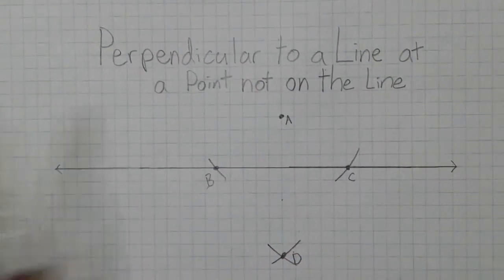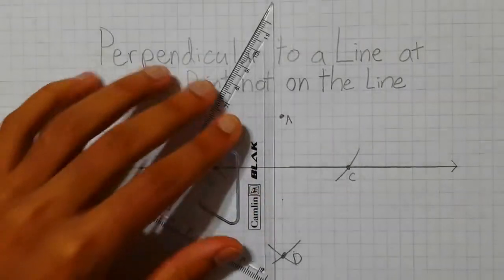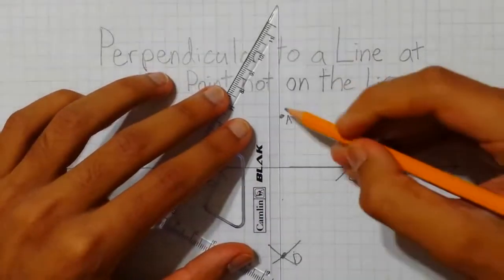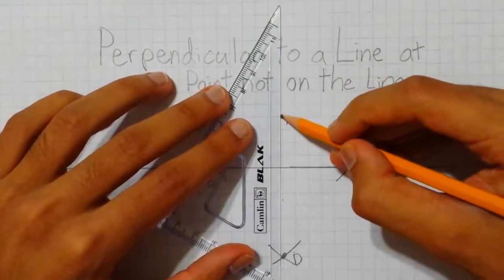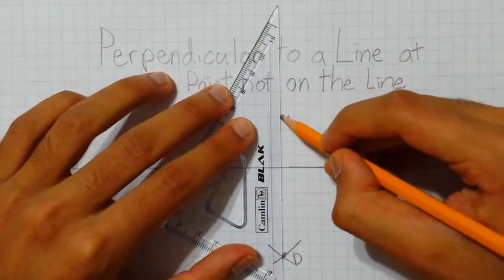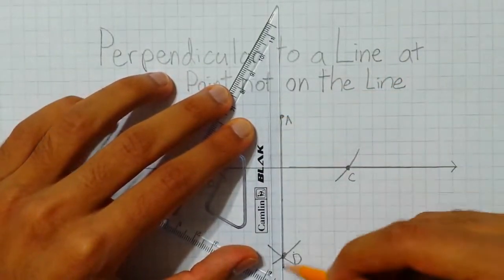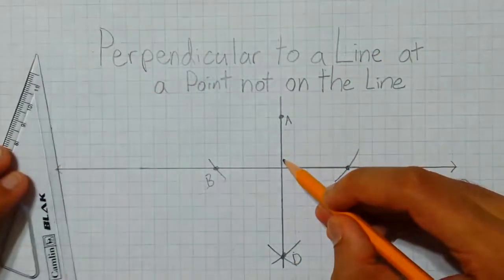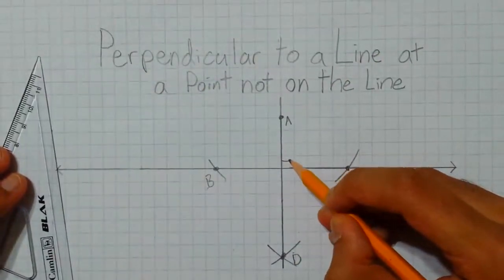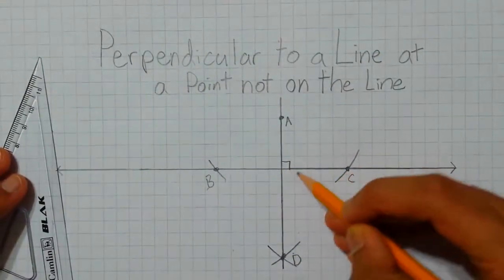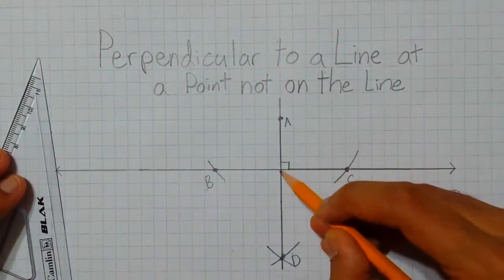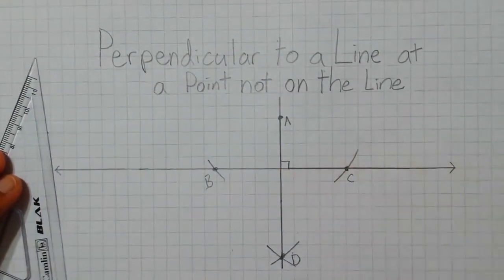Then using our straight edge, we can connect points A and D to form a perpendicular to a line at a point not on the line.